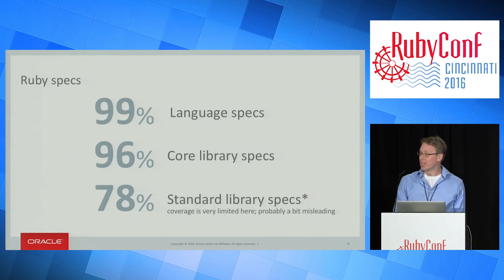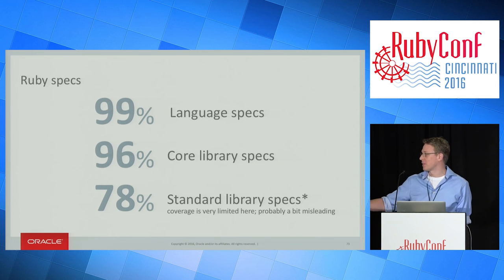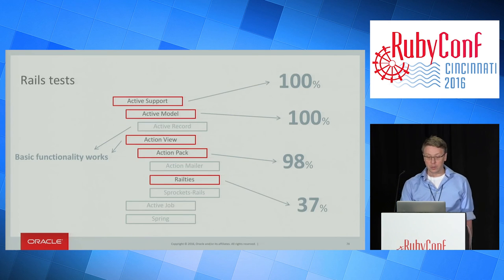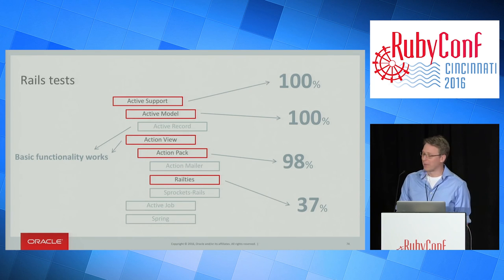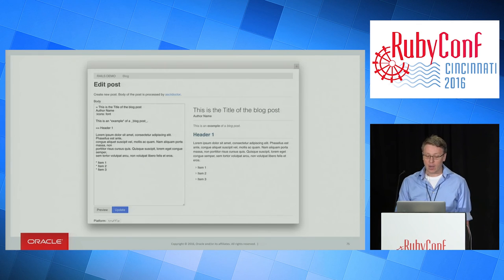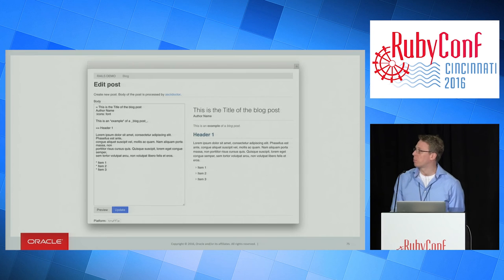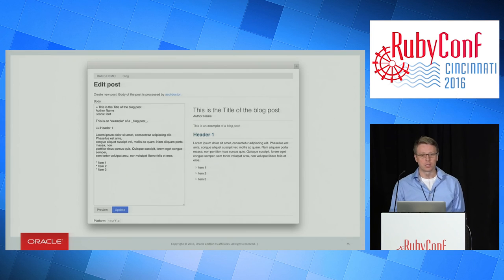In terms of completeness, we pass 99% of the language specs — it was 100%, then people helpfully added more. We pass 96% of the core library specs and 78% of the standard library specs, though that last one's a bit misleading because the coverage is a bit uneven. We're also now running Rails tests — we support 100% of ActiveSupport and ActiveModel, most of ActionPack, and some of ActiveRecord and ActionView. Basic functionality does work there. So we are now able to run Rails. We have a basic blog application using Rails that we wrote ourselves that we can run. After about three years, we are now running Rails.